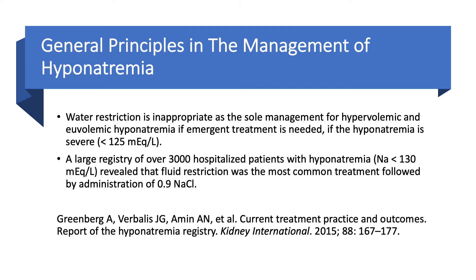In a large registry of over 3,000 hospitalized patients with hyponatremia — sodium below 130 — fluid restriction was the most commonly used treatment, followed by saline. Only 7% of patients got Tolvaptan or 3% saline. What's going to happen? The patient will stay in the hospital longer, increasing length of stay, and they'll leave hyponatremic. In cases of really mild chronic recurrent hyponatremia, water restriction is appropriate — but it is inappropriate for severe cases.